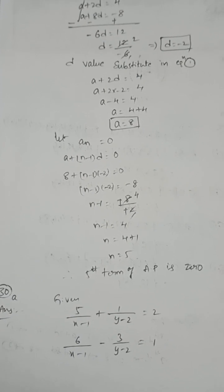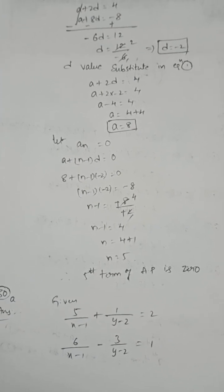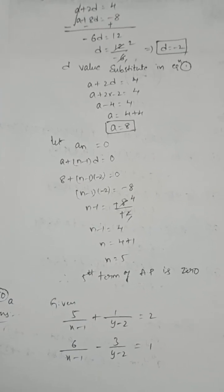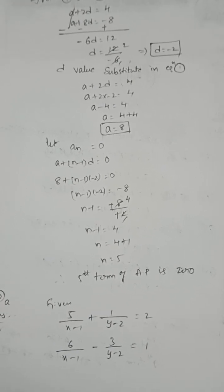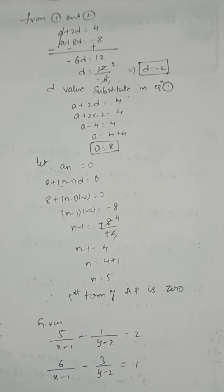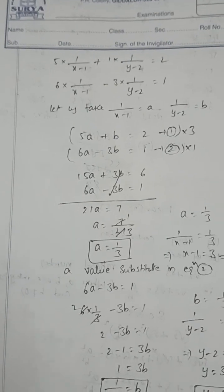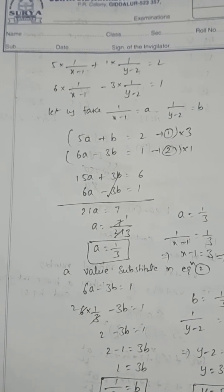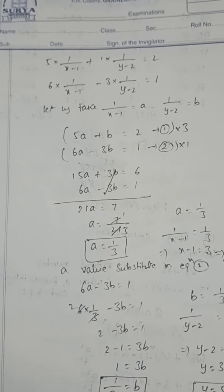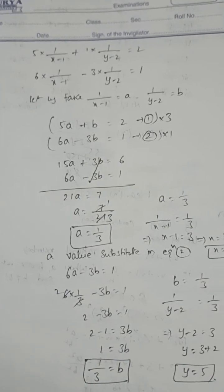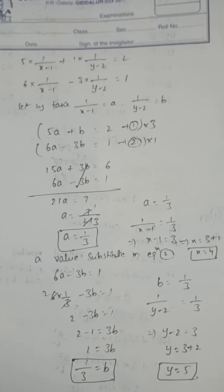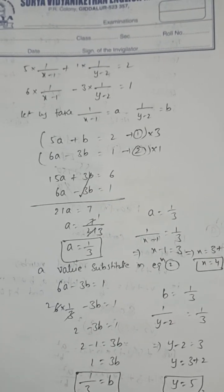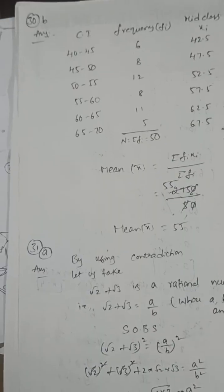Solve x and y by reducing to linear equations: 5/(x-1) + 1/(y-2) = 2, 6/(x-1) - 3/(y-2) = 1. Let 1/(x-1) = A, 1/(y-2) = B. Then solve. A value is 1/3, B value is 1/3. From A, x value is 4. From B, y value is 5.